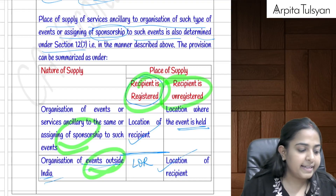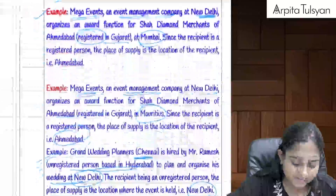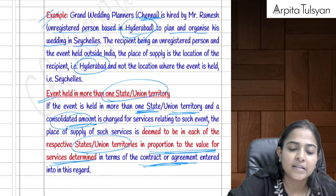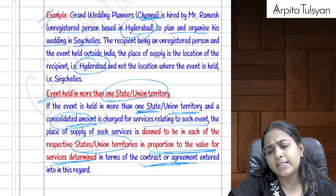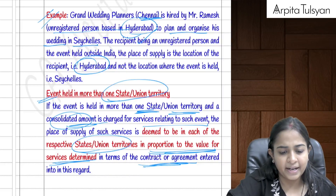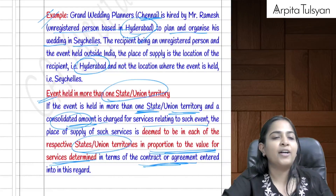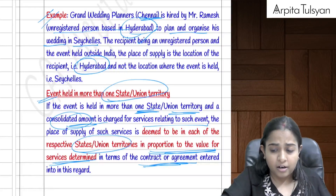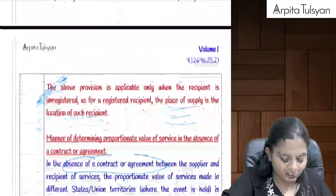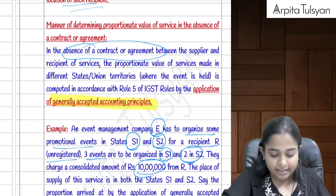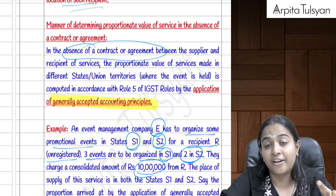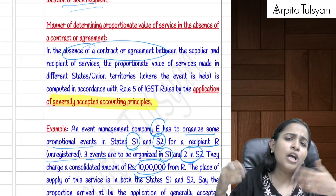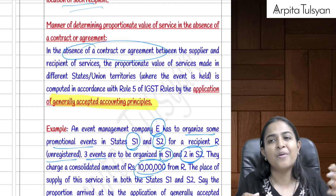If an event spans multiple states, the value is divided as per the contract or agreement. If no contract or agreement exists, the amount is divided as per generally accepted accounting principles — for example, in the ratio of number of events held in each state.